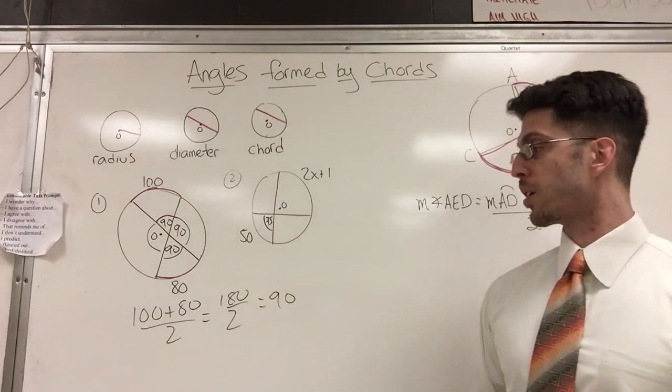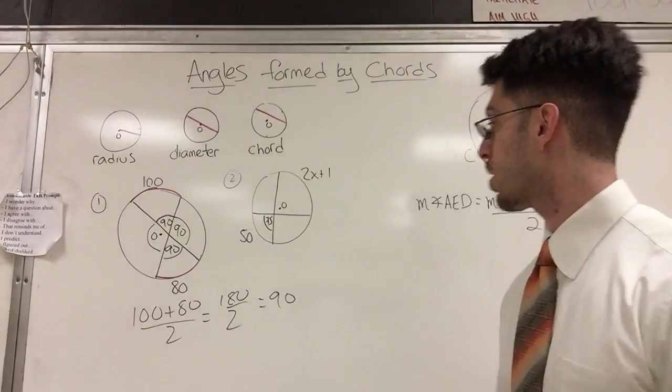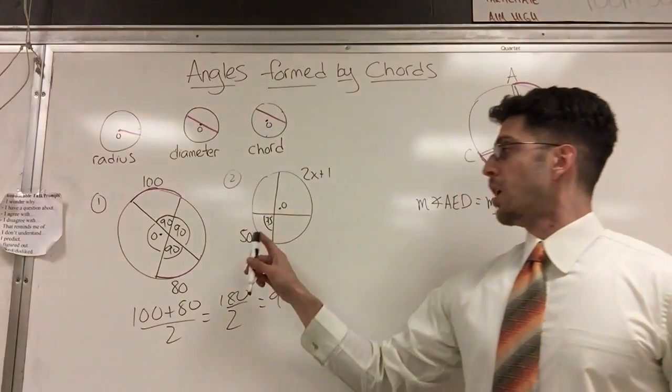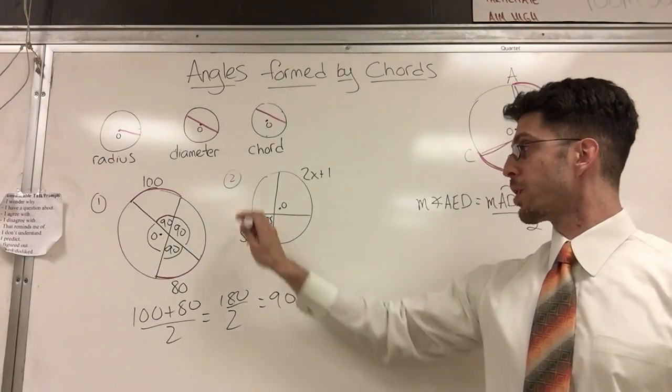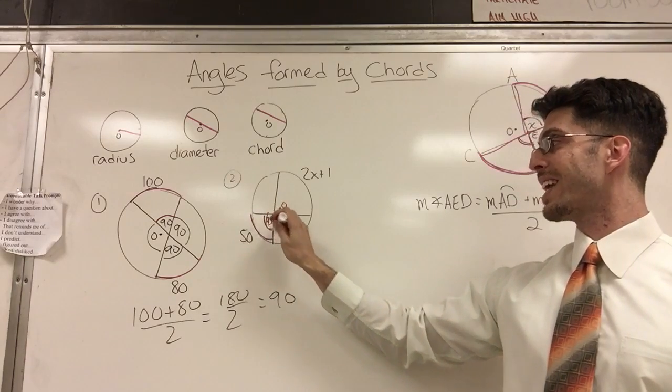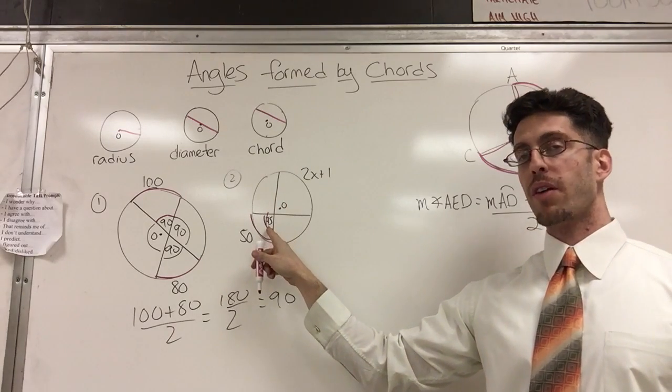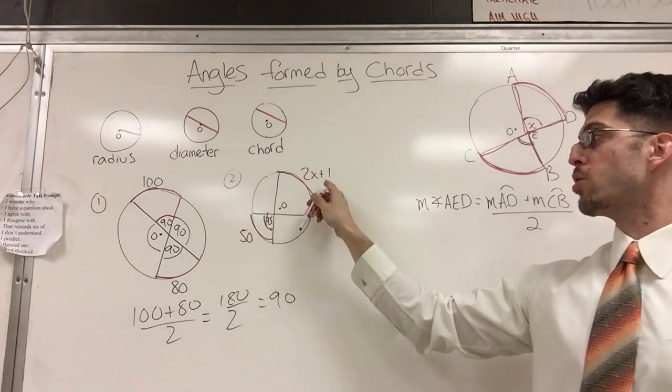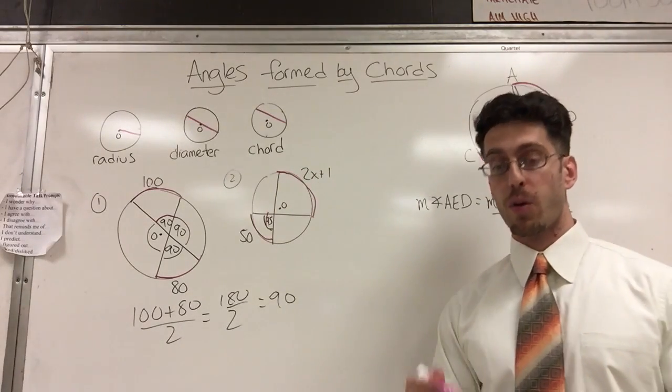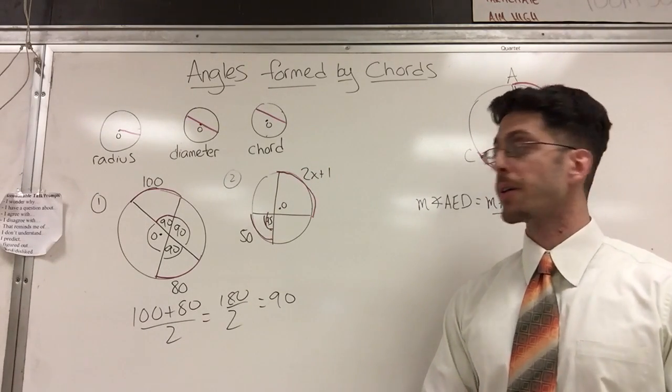Let's go over here. Much more difficult question. So I gave you one of the angles, one of the arcs - 50, 50 degrees. This arc is 50 degrees. And then I gave you that angle is 75. I hope you can see that it's 75. And I'm going to put 2x plus 1 over here. You've got to figure out what is x. We're going to solve for x here.